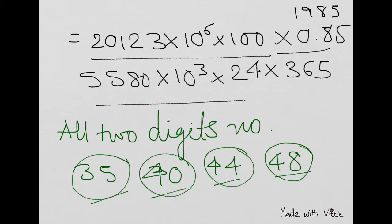This gives us the flexibility to omit this 100, 10 to the power 6 or whatever is there. We just forget about those things.